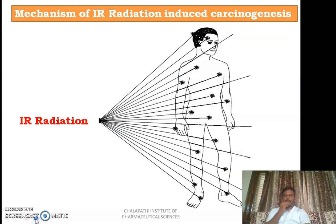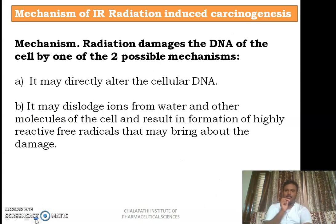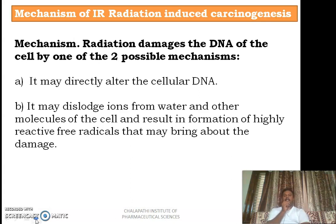Next we are going to discuss the mechanism of IR induced carcinogenesis. Various sources of IR radiation include x-rays, alpha rays, beta rays, gamma rays, and radioisotopes. Radiation induced DNA damage of cells is possible by two mechanisms: one is by direct mechanism and the second is by indirect mechanism.